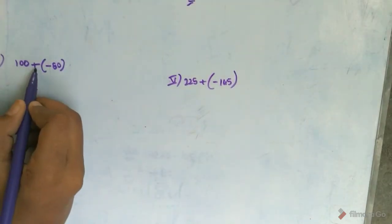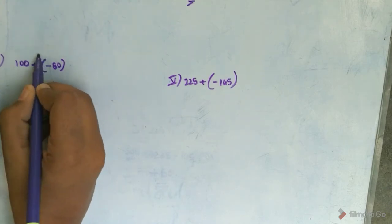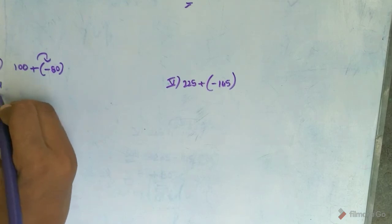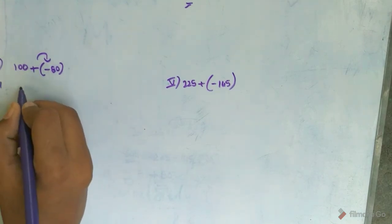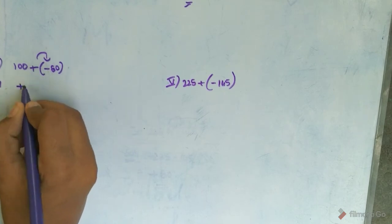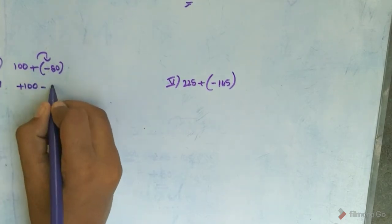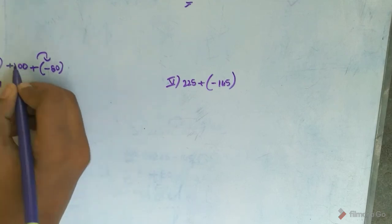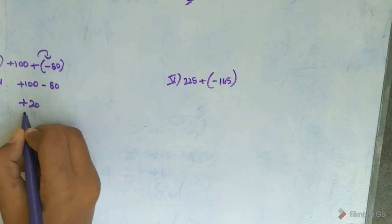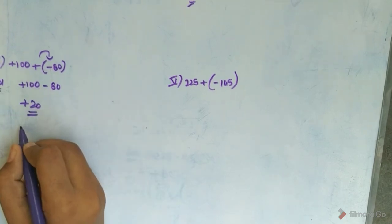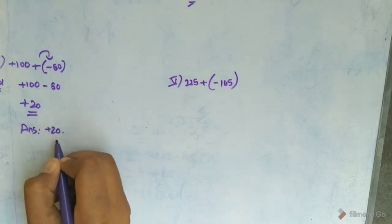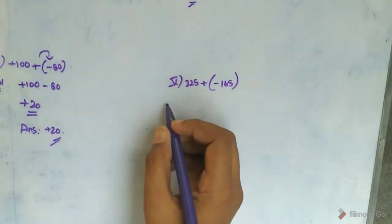The fourth question is: 100 plus of minus 80. We keep the largest number's symbol first, which is plus for 100. Plus of minus 80 simplifies so that 100 minus 80 is equal to 20. The answer is plus 20.